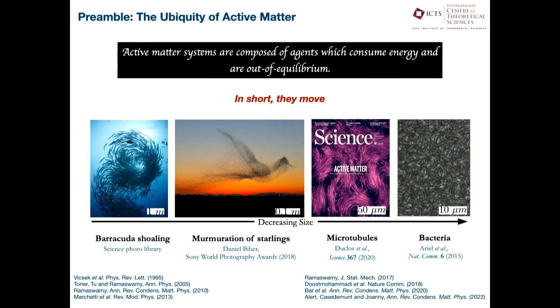what do we mean by active matter? We are talking about systems which have agents which consume energy and are out of equilibrium. In a short summary, these are things which kind of move. There are a whole bunch of very nice papers and reviews, some of which are not an exhaustive list but a biased list, which I highlight here.